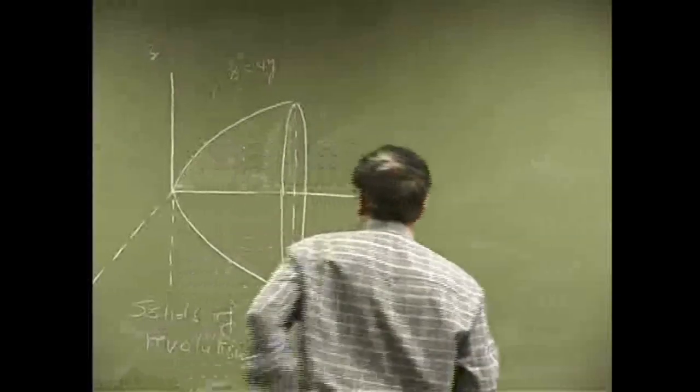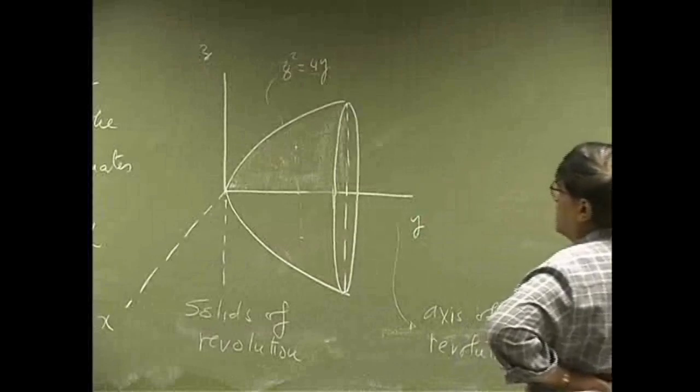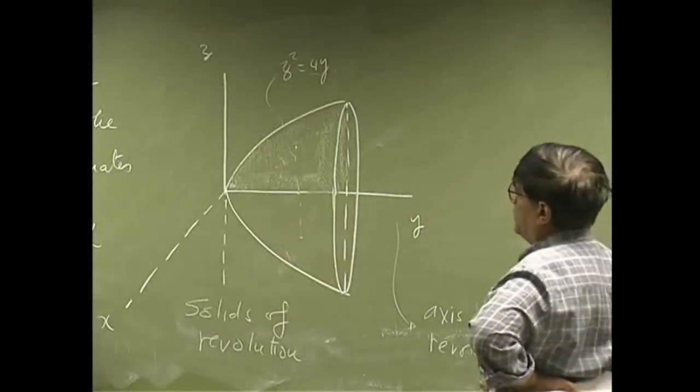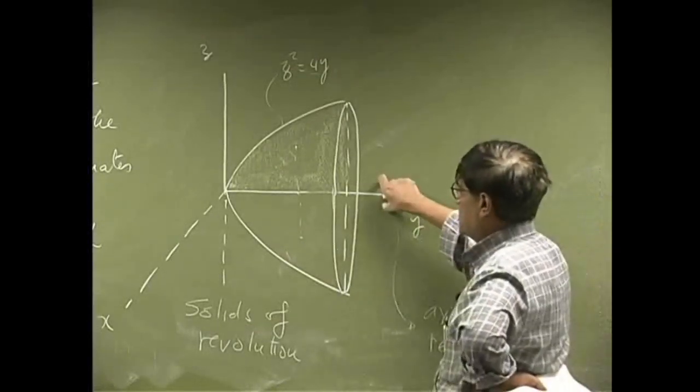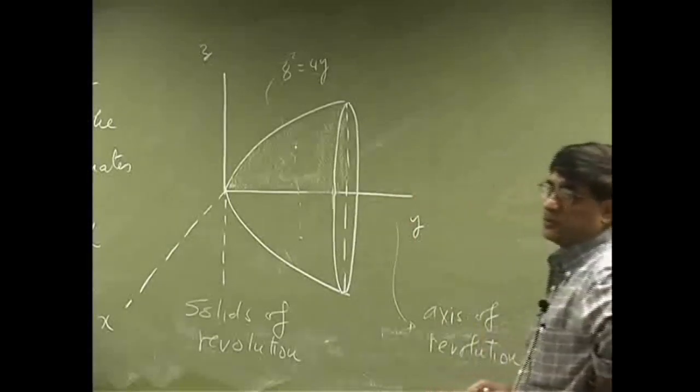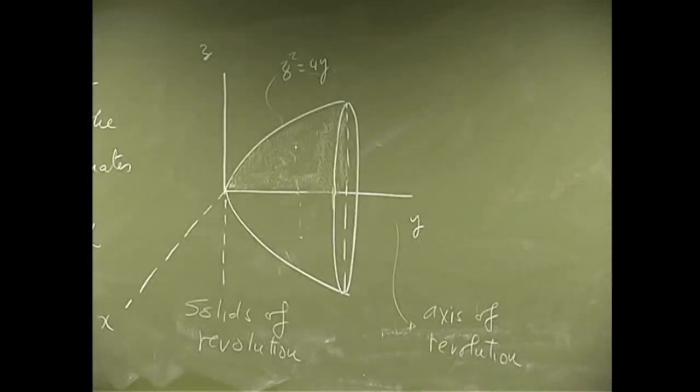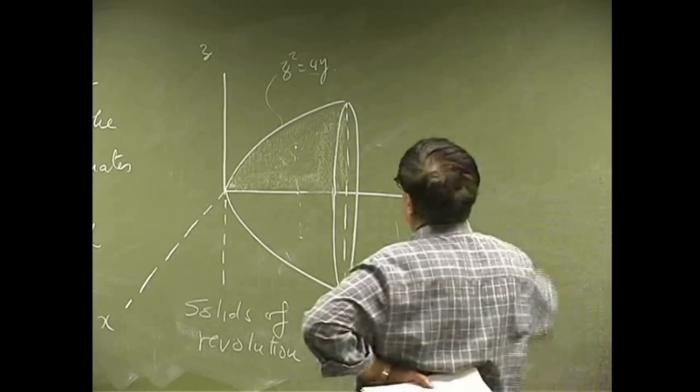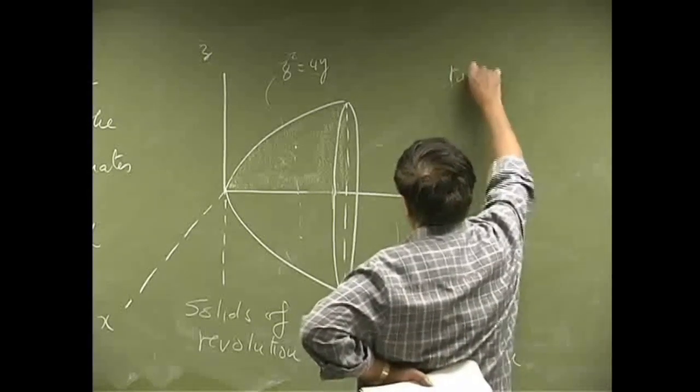Now, when you follow this process, then this axis is not only an axis of revolution, this kind of solids, they have what we call as a radial symmetry.